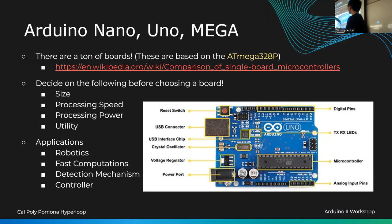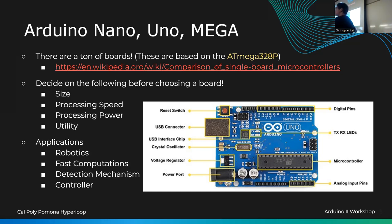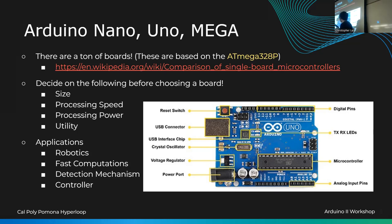The first version includes the Nano, Uno, and Mega. There are tons of boards, clones, and variations, but they all share the same chip. The Arduino houses the microcontroller, and everything else helps it function — things like a crystal oscillator as an external clock, a USB interface chip, a reset switch, a voltage regulator, a power port, and header pins.